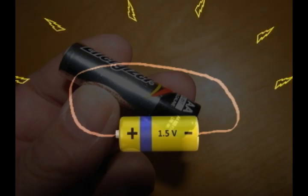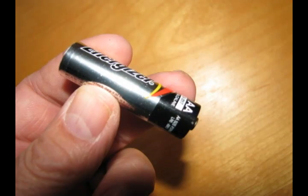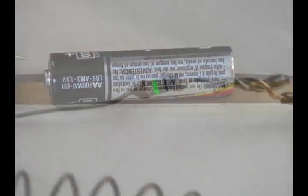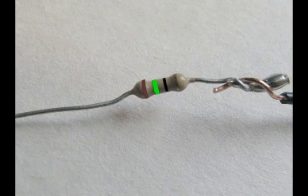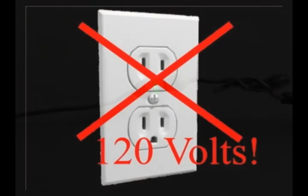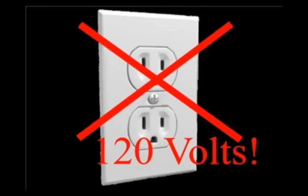There are some safety considerations here. Only use one double A 1.5 volt battery for this demonstration. To avoid short circuiting the double A battery, you must use a resistor in this circuit. And never experiment with anything plugged into a wall outlet.